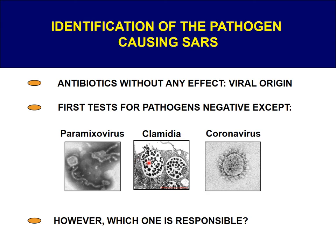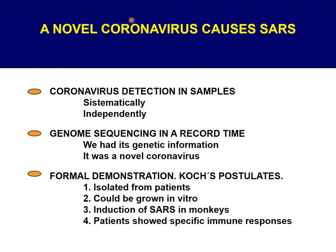All the scientists who were working on coronaviruses at this time tried to identify the pathogen causing SARS. We quickly realized that antibiotics had no effect, so it was probably of viral origin. The first tests for pathogens were negative, with the exception of myxoviruses, chlamydia, and coronaviruses. However, we didn't know which one was responsible for SARS. A short time later, we realized that SARS was caused by a novel coronavirus, because coronaviruses were detected in patient samples systematically and independently across different labs.